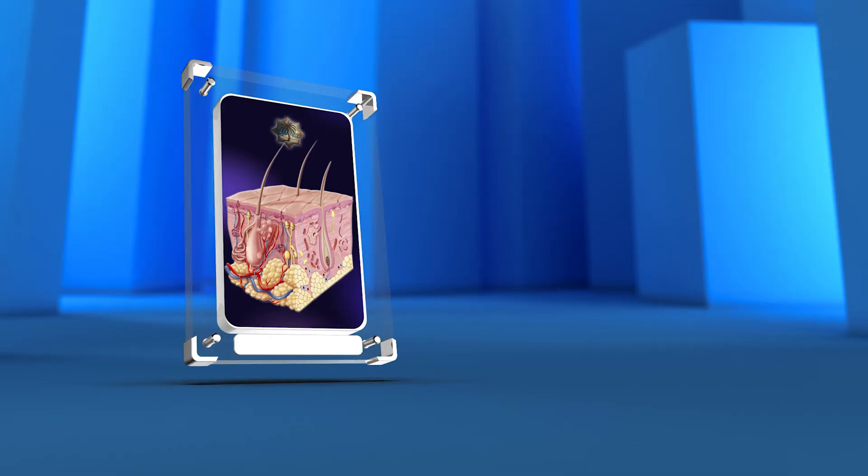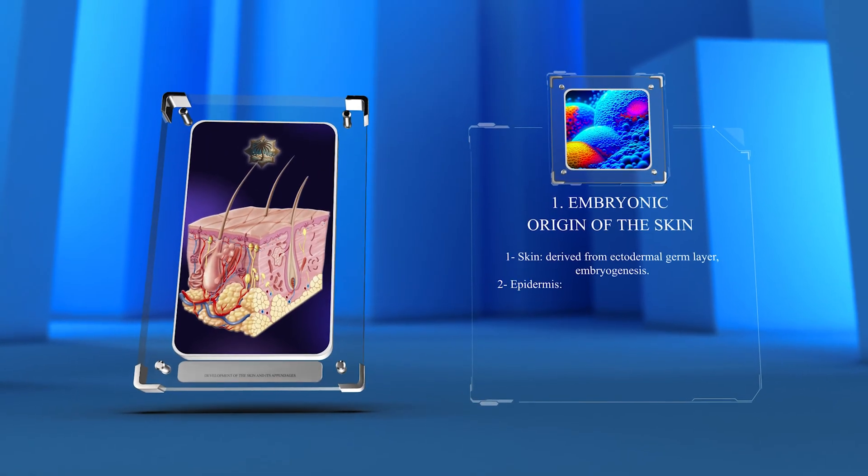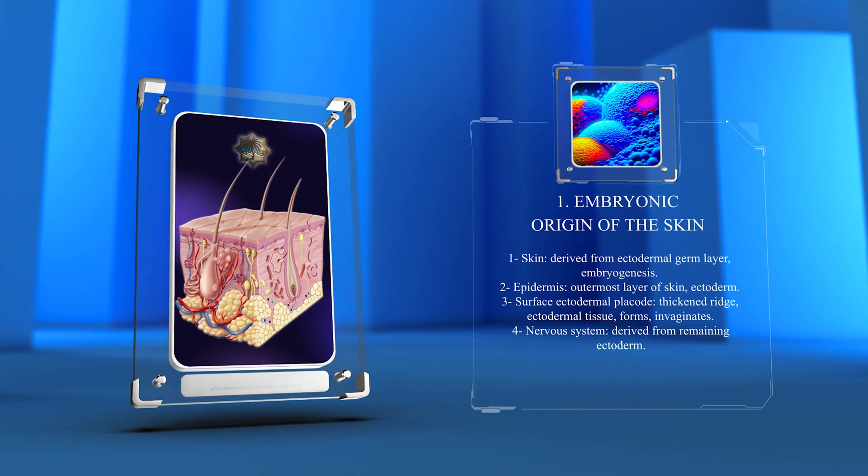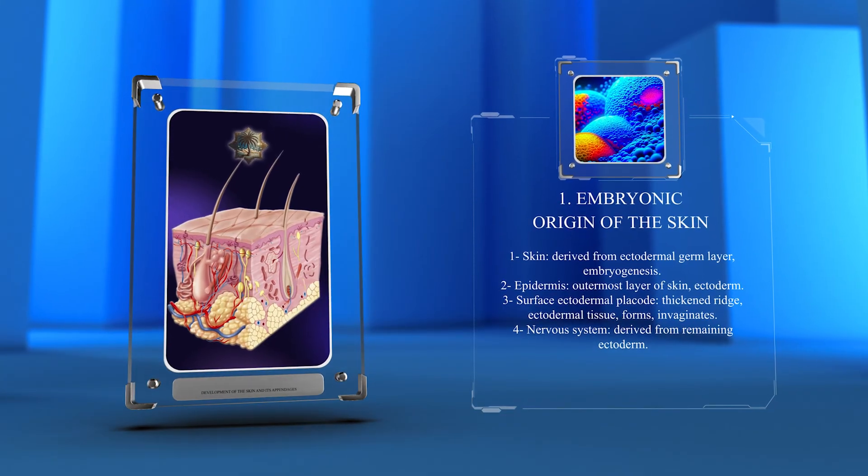The skin is derived from the ectodermal germ layer during embryogenesis. The ectoderm gives rise to the epidermis, which is the outermost layer of the skin, as well as its appendages.